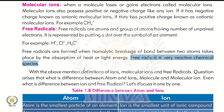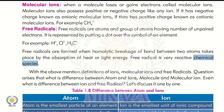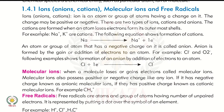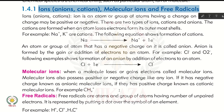So in chemical species we have covered: ions, which include anions and cations, molecular ions, and free radicals — these are the three main chemical species.